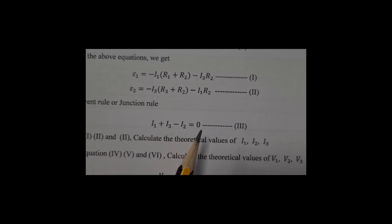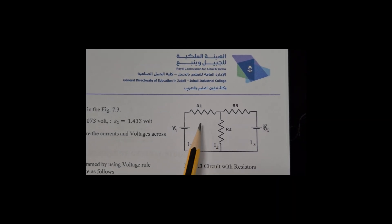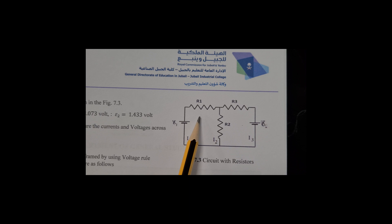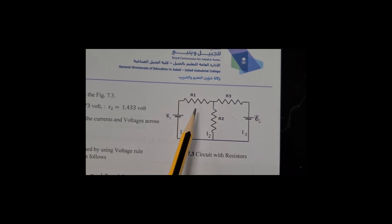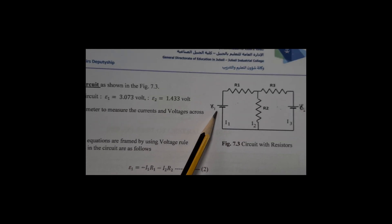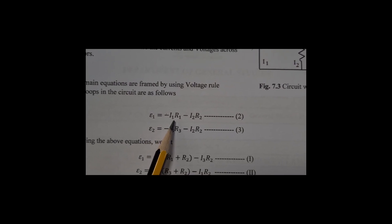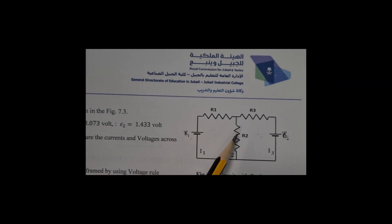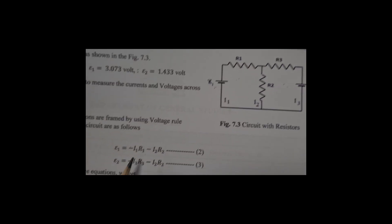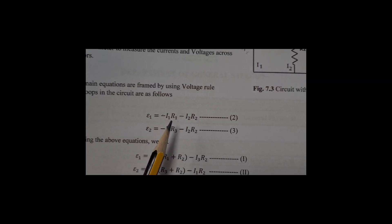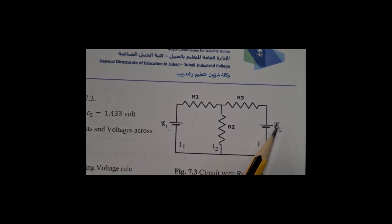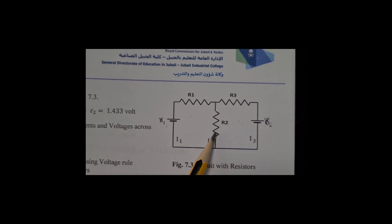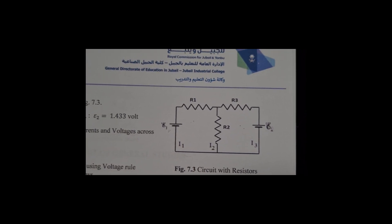Now we split the circuit into Loop 1 and Loop 2, applying the Kirchhoff Loop Rule to each separately to get two equations. For loop 1: Epsilon 1 equals minus I1·R1 minus I2·R2. For loop 2: Epsilon 2 equals minus I3·R3 minus I2·R2.